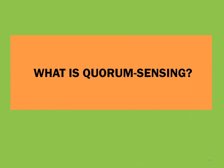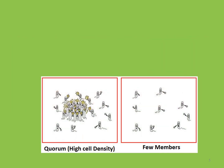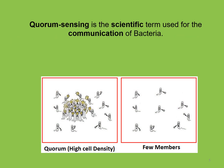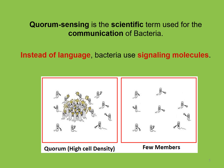Quorum sensing — how can we define quorum sensing? Quorum sensing is the scientific term used for the communication of bacteria. Instead of language, bacteria use signal molecules.